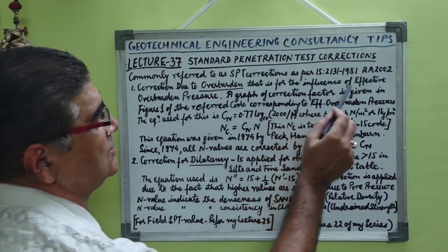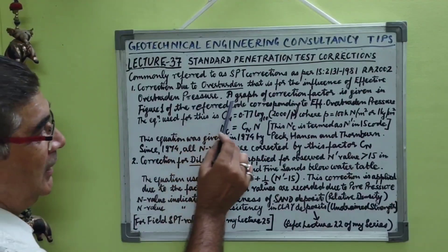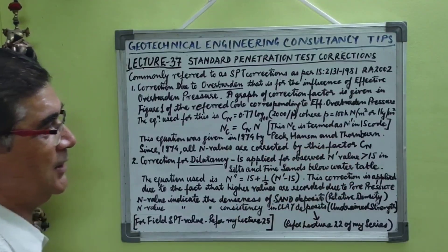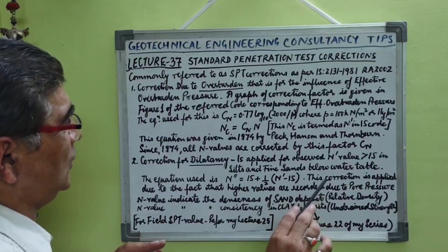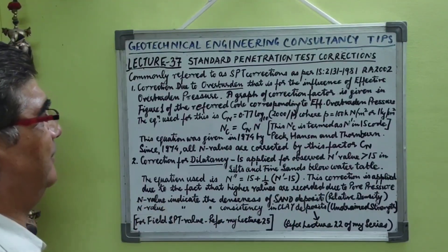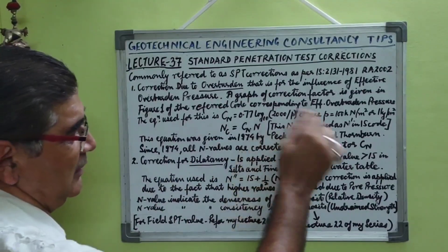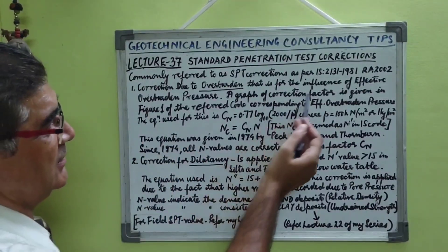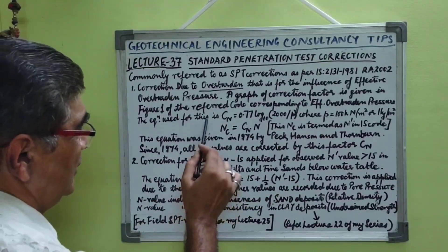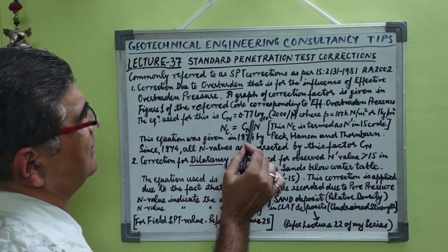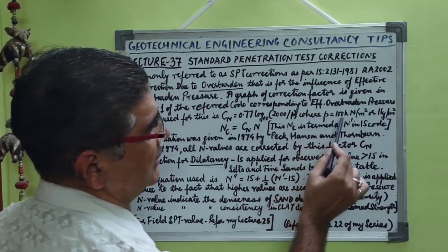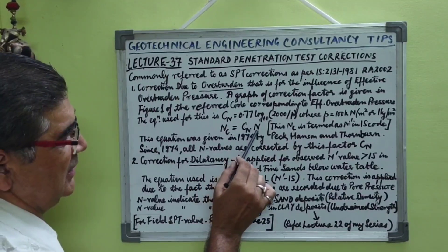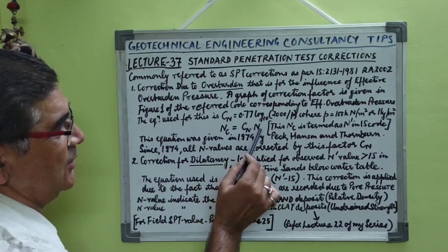The first correction is for the influence of effective overburden pressure. A graph of this correction factor CN is given in Figure 1 of the IS code, corresponding to effective overburden pressure. The formula for applying this correction factor is: CN = 0.77 × log(2000/P), where P is 100 kN/m² or 1 kg/cm². The corrected value N' is equal to CN multiplied by N, where N is the observed field value.